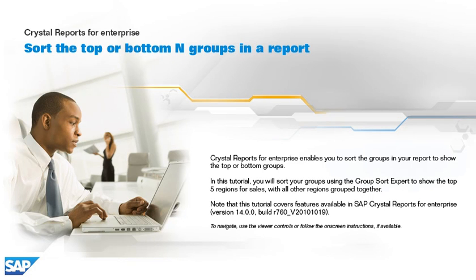Crystal Reports enables you to sort the groups in your report to show the top or bottom groups. In this tutorial, you will sort your groups using the Group Sort Expert to show the top 5 regions for sales, with all other regions grouped together.